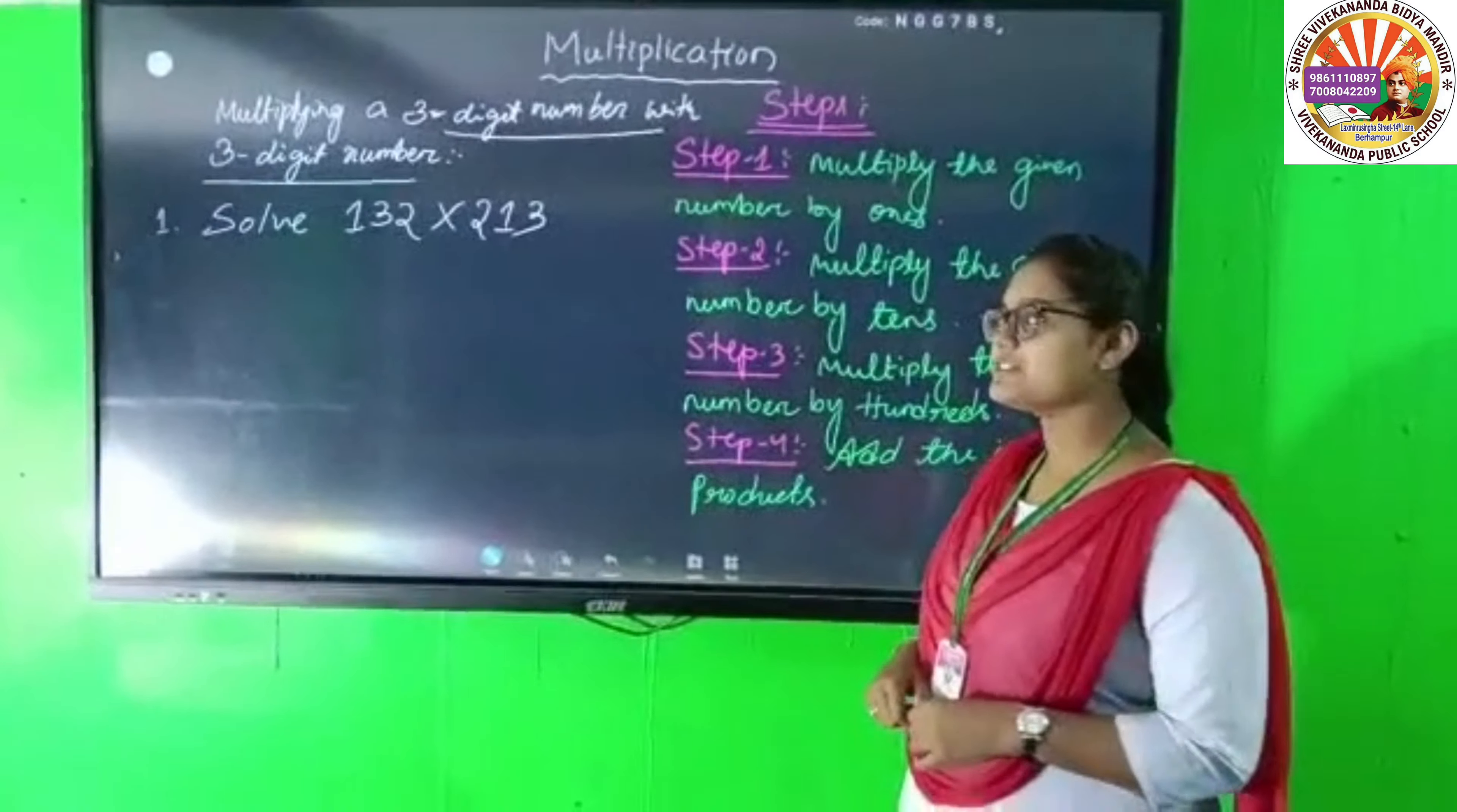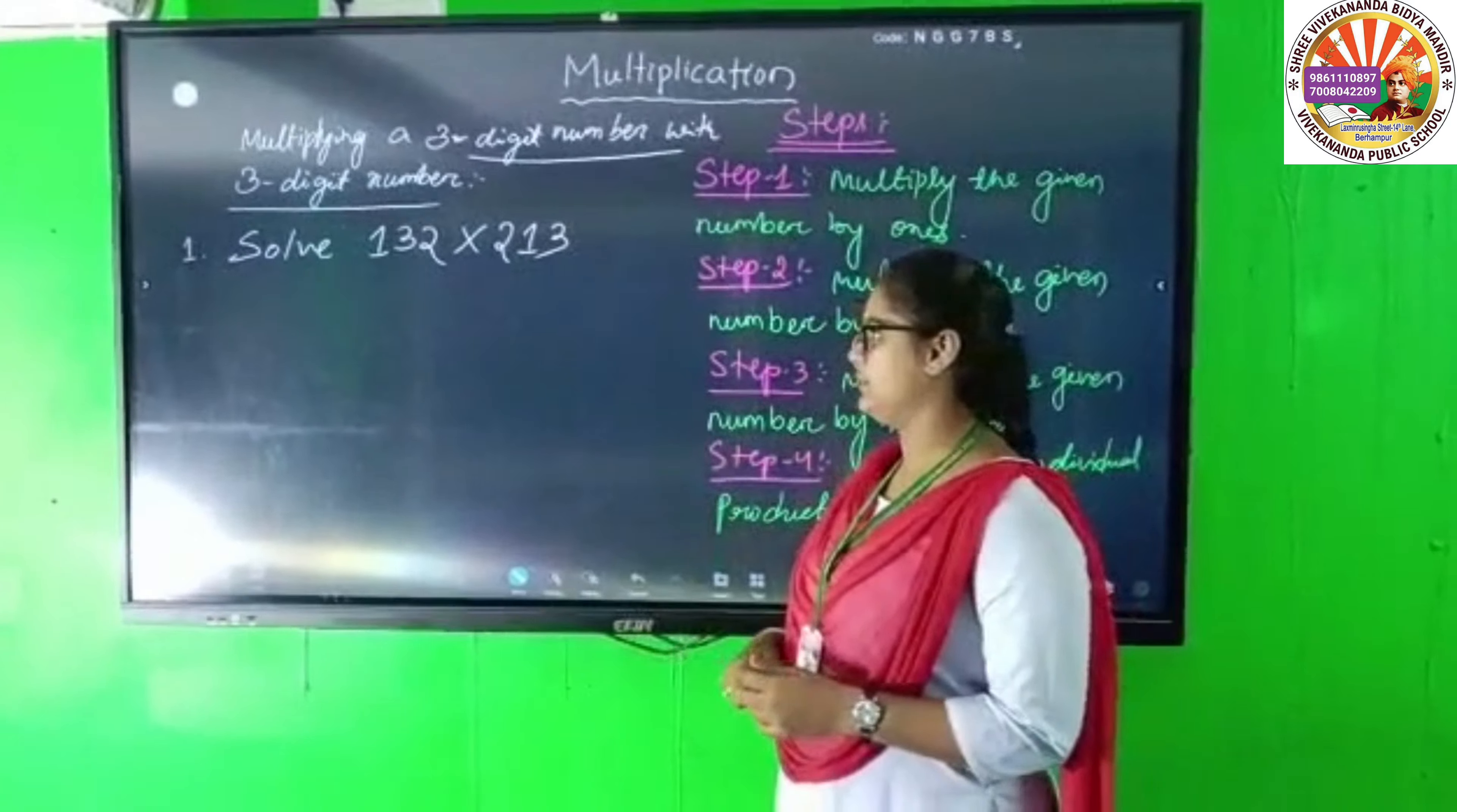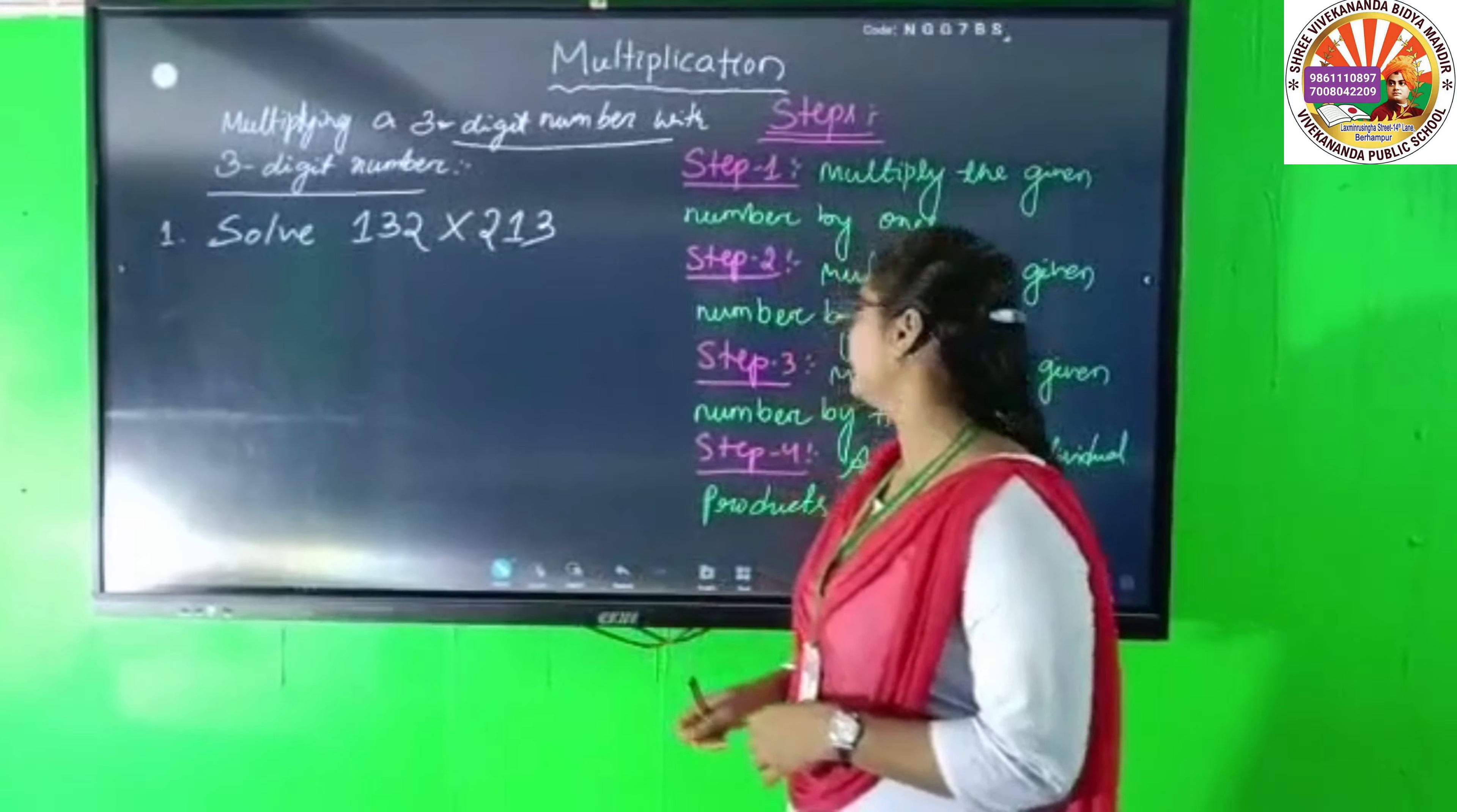Hello everyone, I am the economist, translated by Nankaraj. Today I am going to teach you about multiplication. I will demonstrate how to multiply 3-digit numbers. First, multiply the given number by ones.